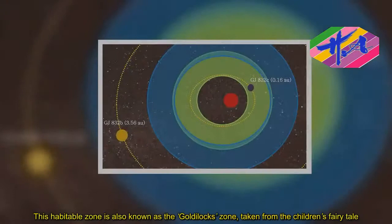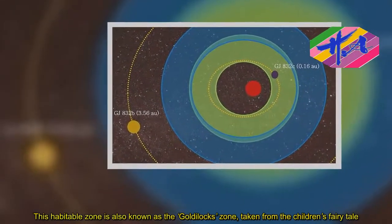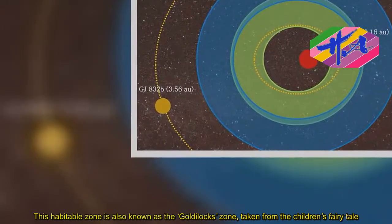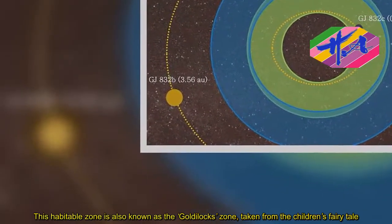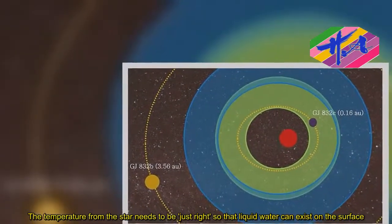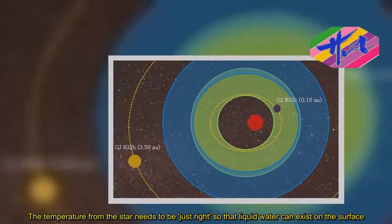This habitable zone is also known as the Goldilocks zone, taken from the children's fairy tale. The temperature from the star needs to be just right so that liquid water can exist on the surface.